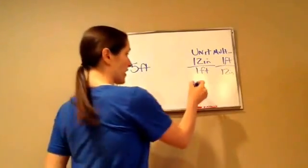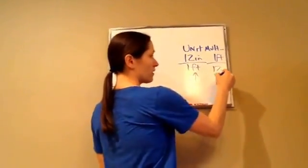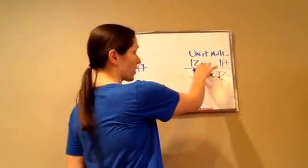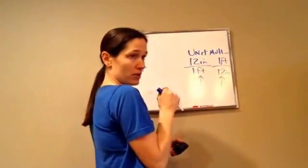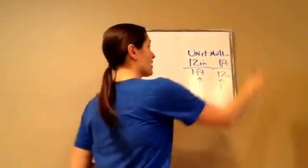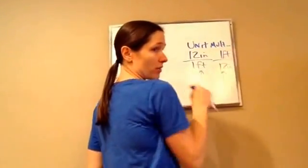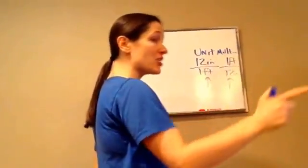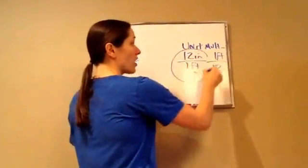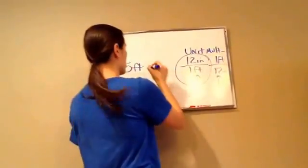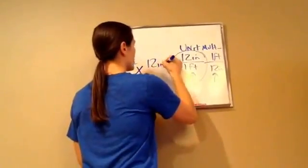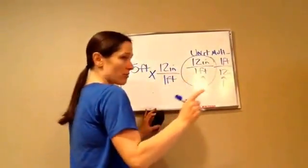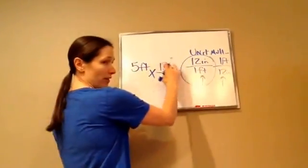Look at both of these unit multipliers. This one has inches on top, and this one has feet on top. If I'm going to change it to inches, I'm going to choose inches on top. So I use 12 inches over 1 foot. Now before we start multiplying, because this is a fraction, I'm going to make this a fraction — remember how you can make 5 over 1 and it still means 5.